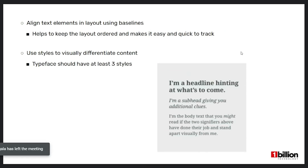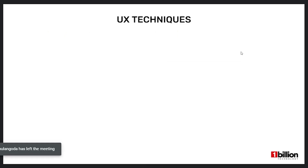The next rule is to align text elements in layout using baseline. When there are multiple text elements on a single screen they should all share points of common alignment, which helps keep the layout ordered and makes it easy and quick to track. Always make sure to use baseline when aligning text elements. The final rule is to use styles to visually differentiate content. When choosing a typeface it should have at least three styles — normally regular, italic, and bold. In the below example they have used three different styles of the same font to differentiate the content. That concludes my portion — next Manoj will continue the presentation. Thank you.